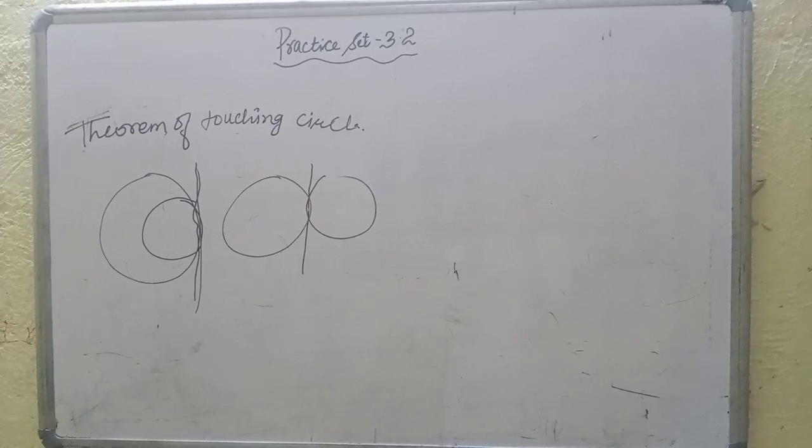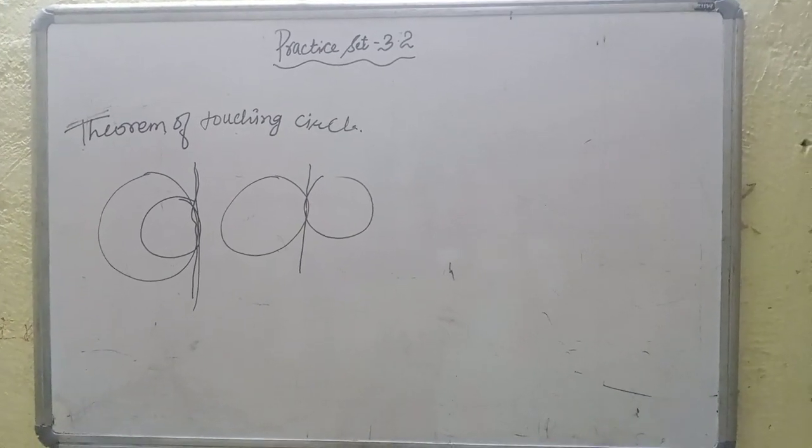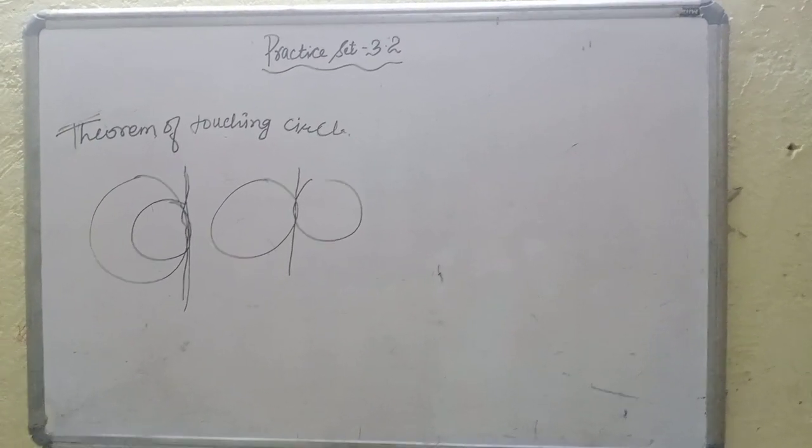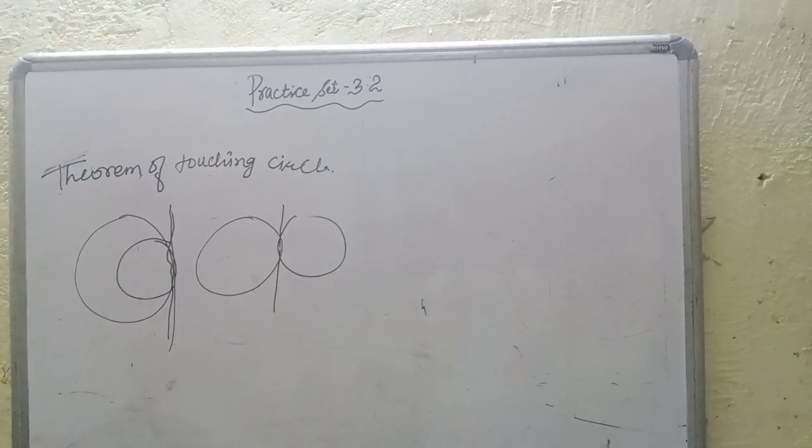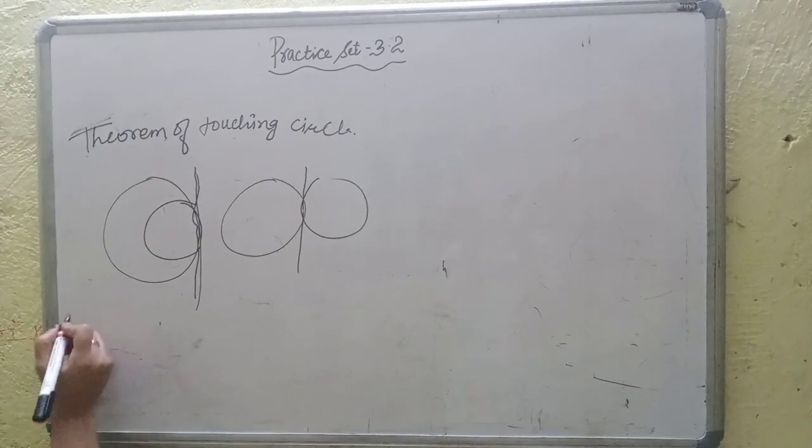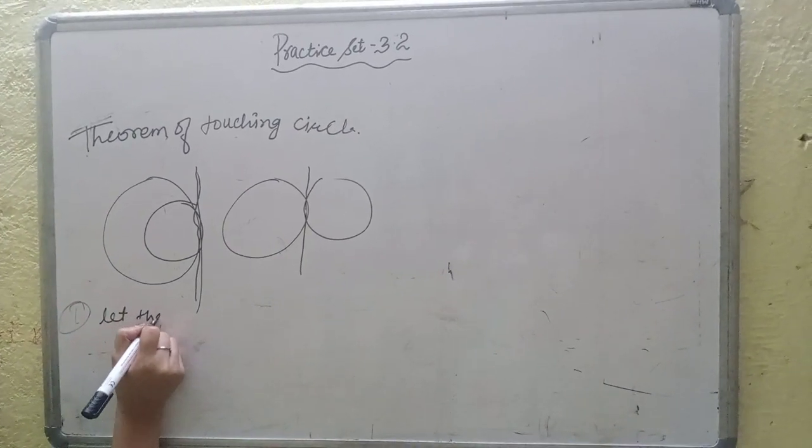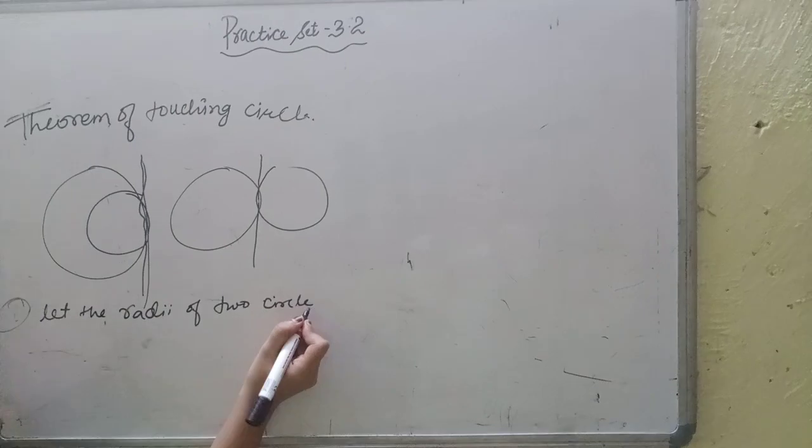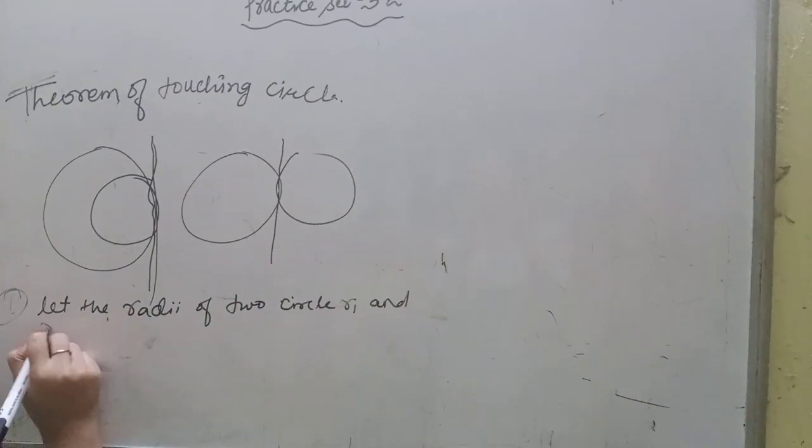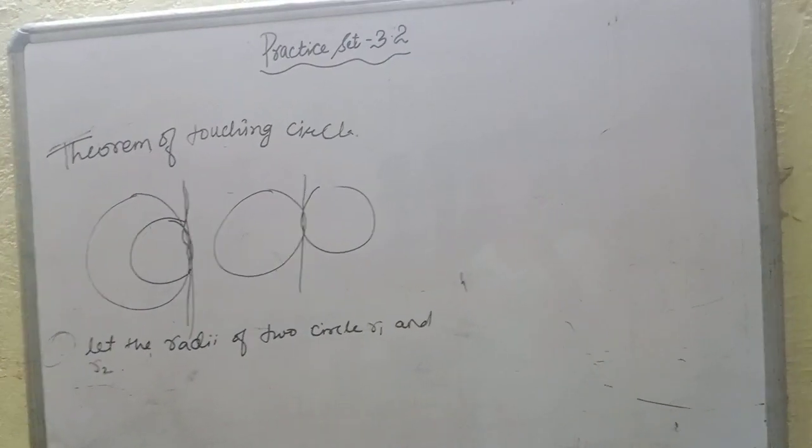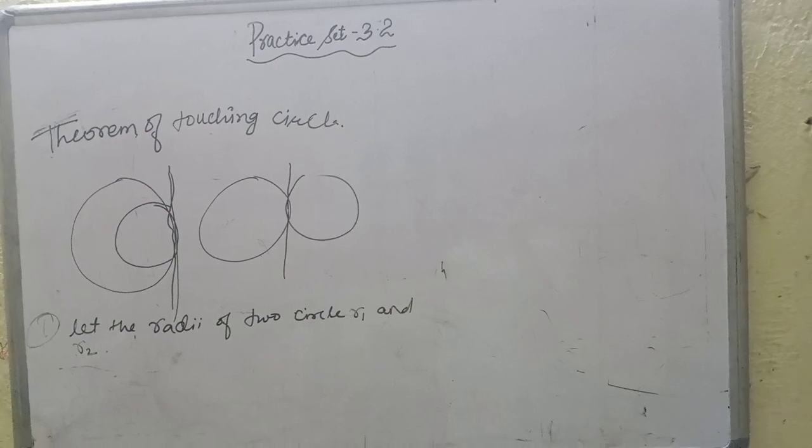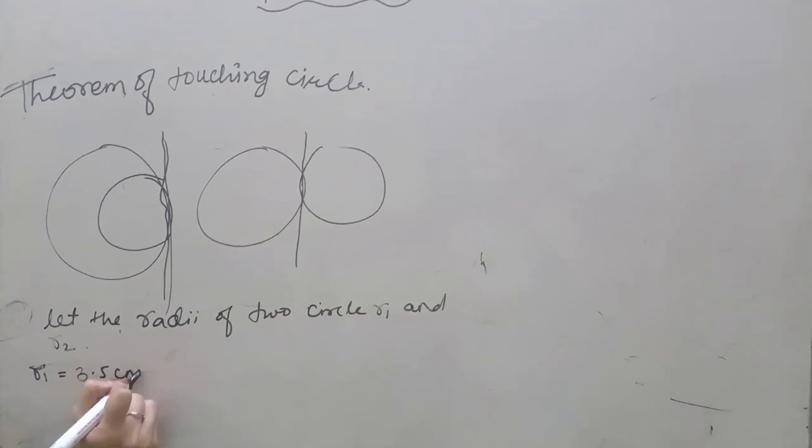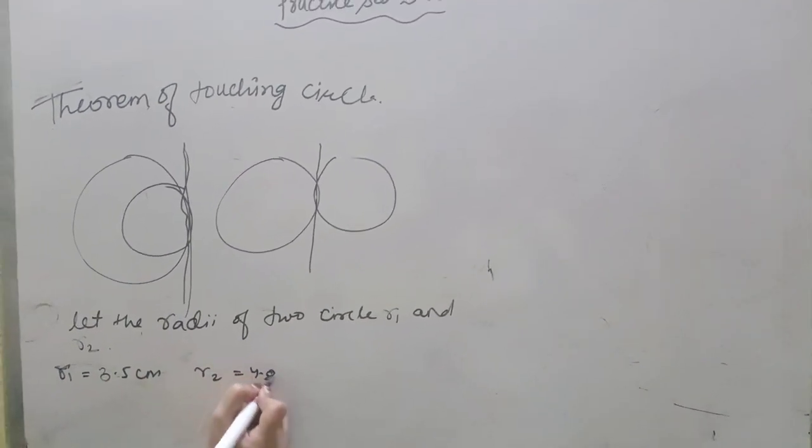And let's start with the 3.2. First question. Two circles having radii 3.5 and 4.8 cm. Touch each other internally. Find the distance between their centers. So, what do we do? Let the radii of two circles R1 and R2. R1 is big circle and the R2 is small circle. R1 is 3.5 cm and R2 is 4.8 cm.